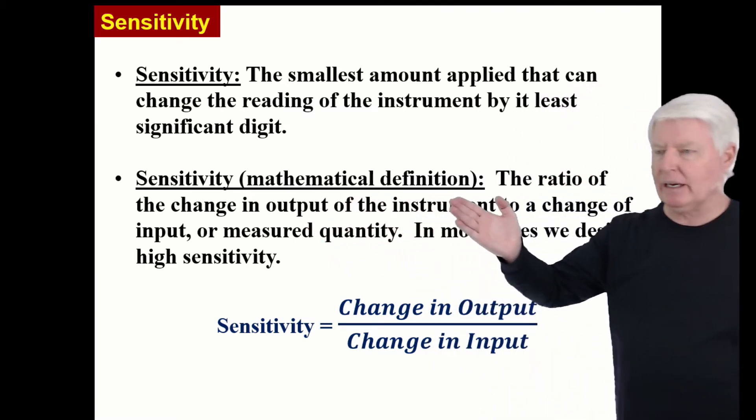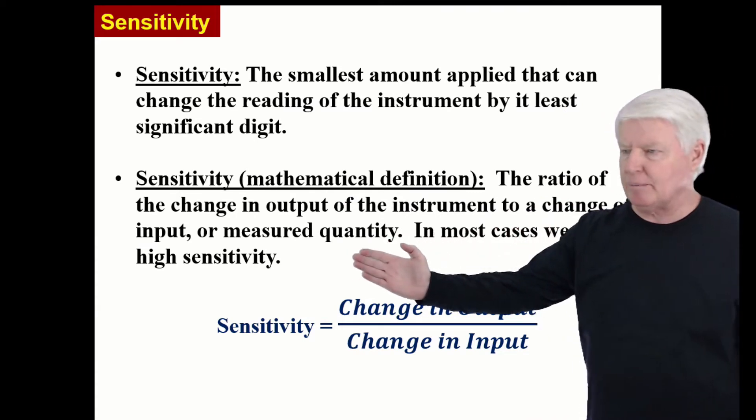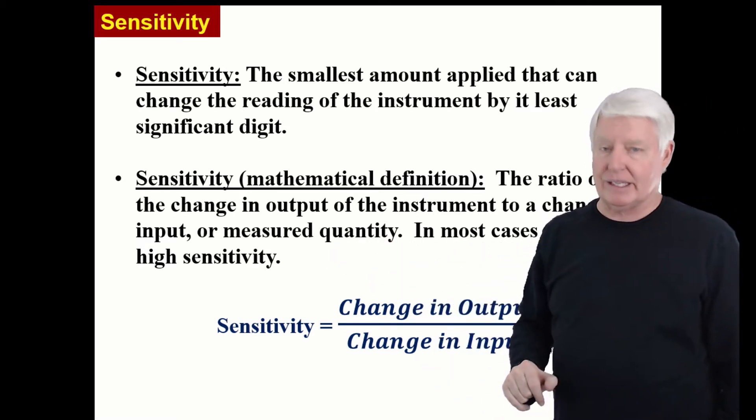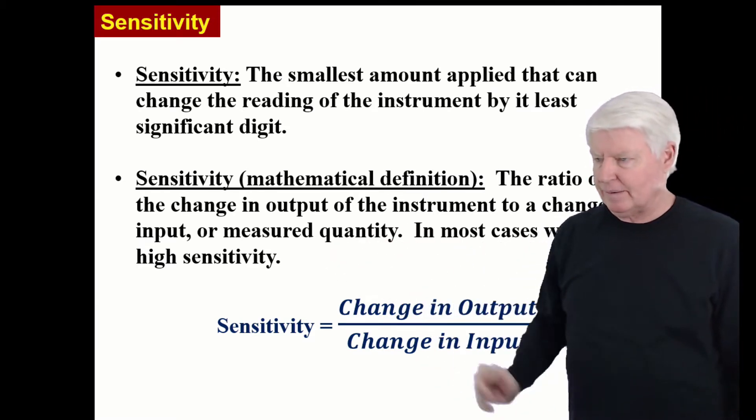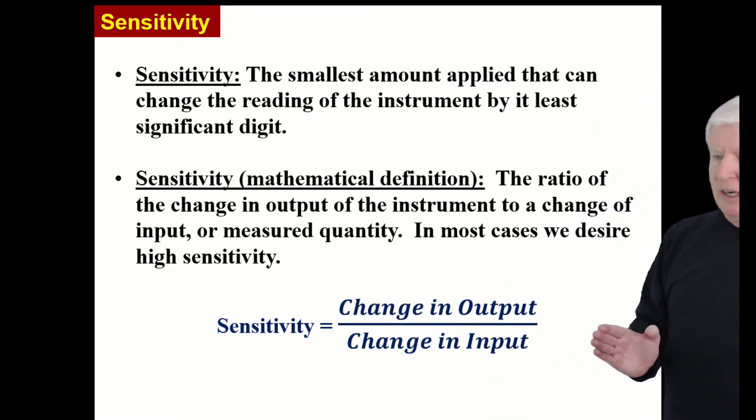Sensitivity mathematical definition: the ratio of the change in the output of the instrument to a change of the input or measured quantity. In most cases we desire high sensitivity is a good thing, low sensitivity not so good. Here it is mathematically: Sensitivity equals change in output over change in input.